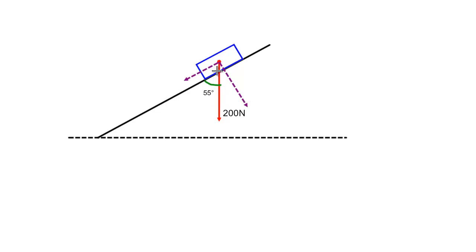Exactly as before, the component that is touching the angle, in this case the component acting down the slope, can be calculated by multiplying the magnitude of the vector by the cosine of the angle. So in this case, the component acting down the slope will be equal to 200 cos 55, which is equal to 115 Newtons.